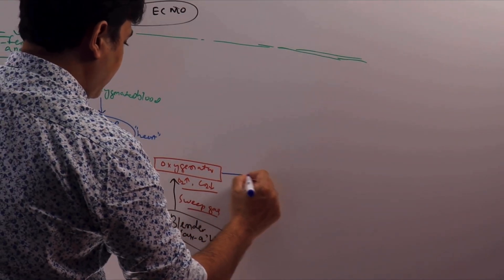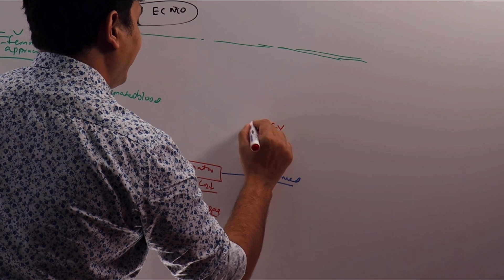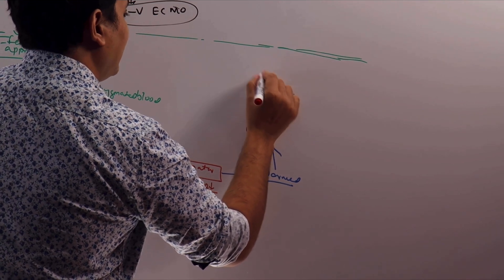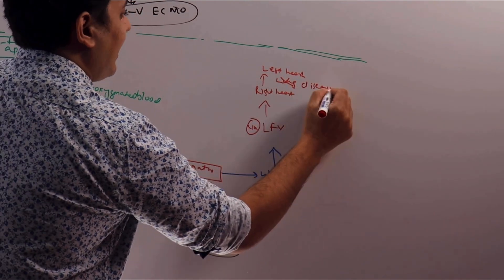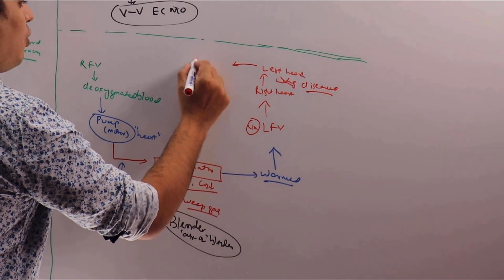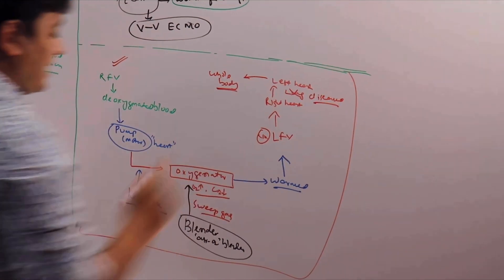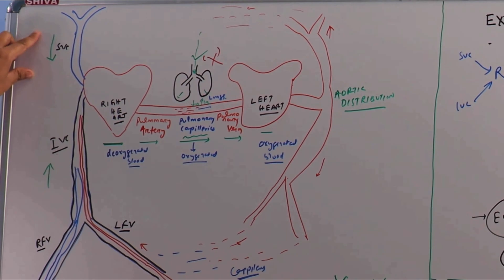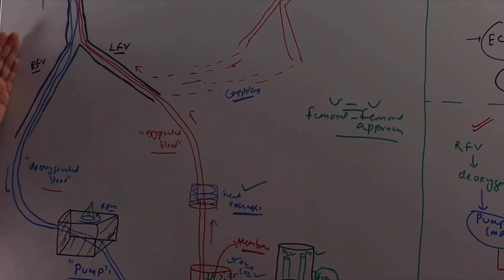Once the blood is oxygenated it is warmed by the heat exchanger and can be put back in via the left femoral vein, going to the right heart and then to the left heart. The lung is diseased and will do no work; we give the lung time to recover. Meanwhile, the oxygenated blood is supplied to the whole body. In a femoro-femoral setup we take blood from the right femoral vein; alternatively we can take blood from the jugular and return it via the femoral — the access choice is flexible.